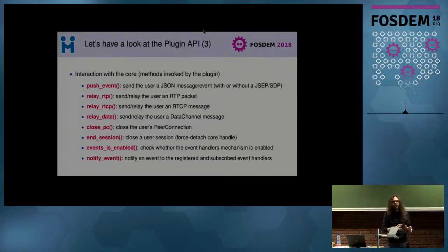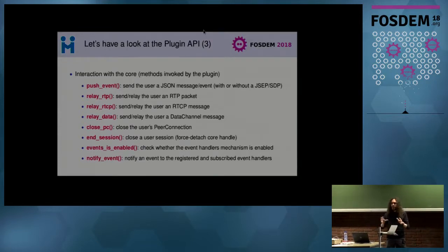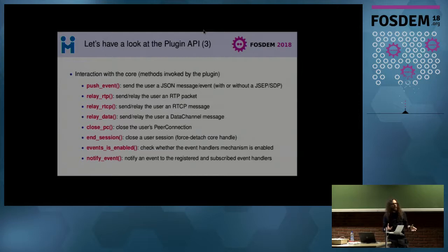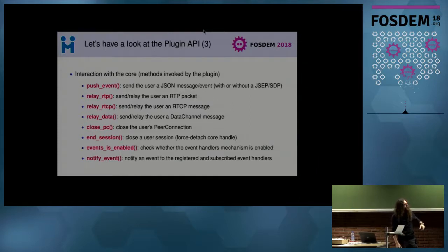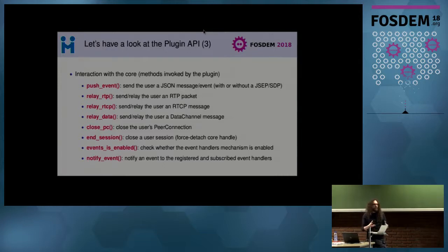The core also exposes an API by which plugins can send info back to users. Each plugin in Janus is essentially a separate application with its own messaging transported over the Janus API. Plugins can send RTP packets, statistics, and data channel messages back to users, giving complete control over what a connection transports within the context of a session.